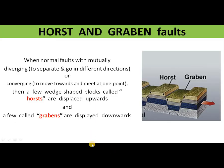Horst and graben faults: when normal faults with mutually diverging — meaning separating and going in different directions — or converging — meaning moving towards and meeting at one point — occur, a wedge-shaped block forms. This wedge-shaped block raised upward is called a horst, and one displaced downward is called a graben. Horst and graben faults are due to diverging and converging of the blocks.